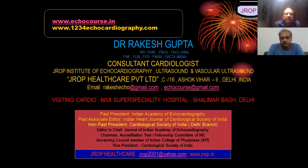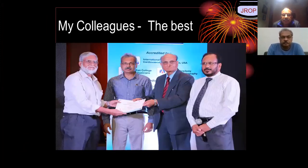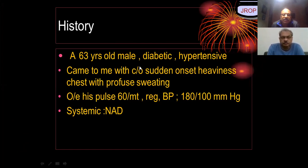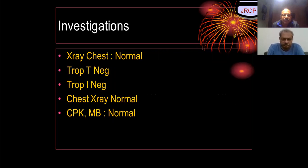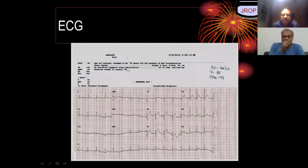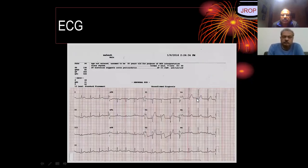Let's start with this case presentation. A 63-year-old female, diabetic and hypertensive, came to us with sudden onset heaviness in the chest with profuse sweating. Blood pressure was 180/100, pulse was 60. Systemic examination was unremarkable. Chest X-ray was normal. Troponin T and Troponin I were negative, CPK and CPK-MB were also negative. Here is the ECG of this particular patient — two ECGs taken within a gap of about one to two minutes, ECG 225 and ECG 224, showing almost the same findings.